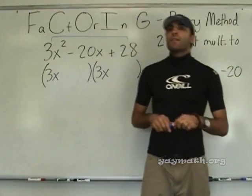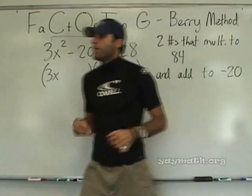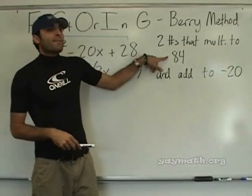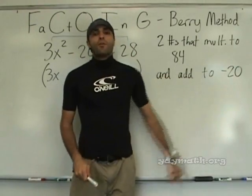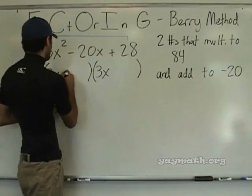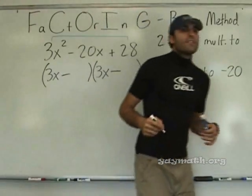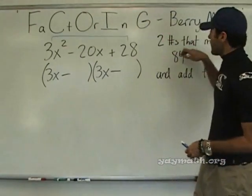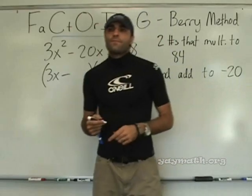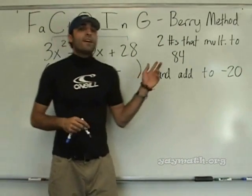First of all, what kind of numbers must they be — positive, negative, one negative, one positive, both, neither? One negative. What kind of numbers multiply to positive and add to negative? Both negative. So we can imply that only two numbers that are both negative multiply to a positive and add to a negative. What two numbers multiply to positive 84 and add to negative 20?